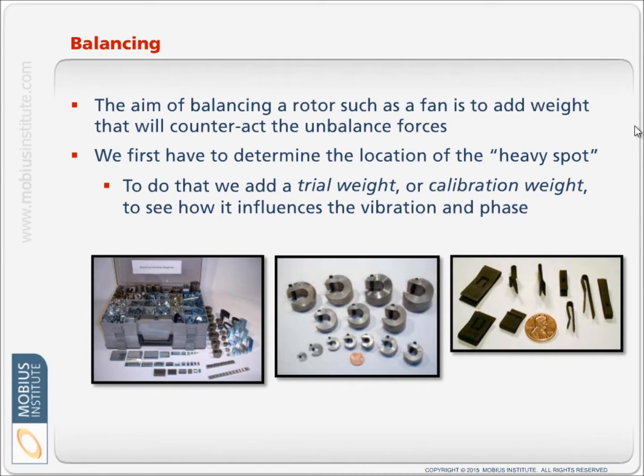So the basic balancing process is that we will take vibration readings on the machine when it is out of balance and measure the vibration amplitude and phase. That will give us an idea of where the heavy spot is on the rotor. The heavy spot is the concentration of the unbalanced forces. Then the idea is that we will add a weight to the rotor to counteract those unbalanced forces. But to find out exactly where the heavy spot is and to figure out how much weight to add, we will add a trial weight to the rotor first.